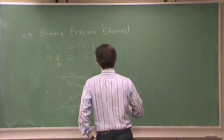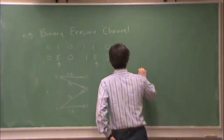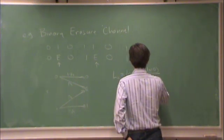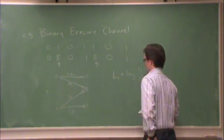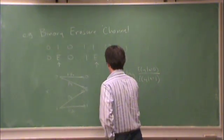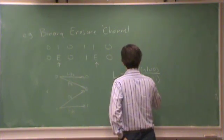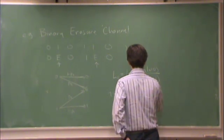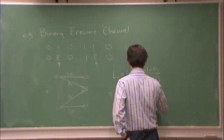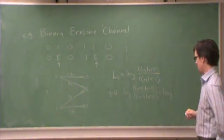So what does my channel message look like now? I have log f of y given x equals 0 divided by f of y given x equals 1. So there are now three possibilities for y. If y is 0, I have log f of y equals 0 given x equals 0 divided by f of y equals 1 given x equals 0, which is log of, what's the numerator?